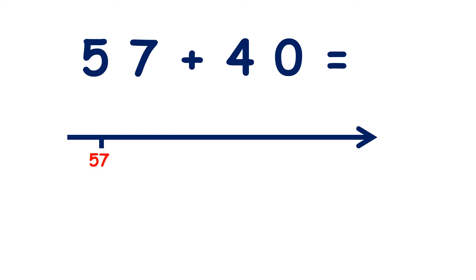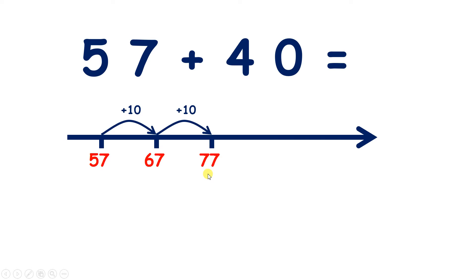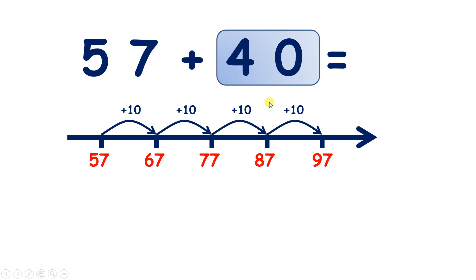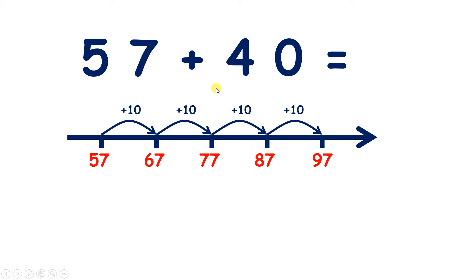Now we have 57 add 40 on a number line. So we start on 57, and we're adding 40, so let's add four tens. Add 10 to make 67. Add another 10, makes 77. Another 10, 87. And one more 10, so that we've added four tens, makes 97. So we've added 40 because we've added four tens, we've added 10 four times. So 57 add 40 is 97.